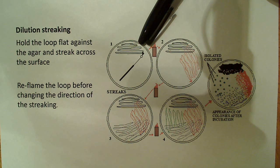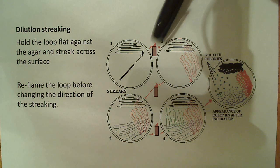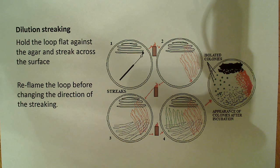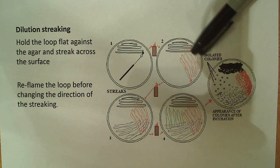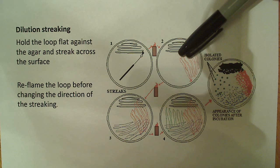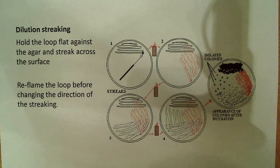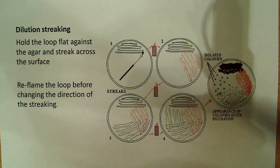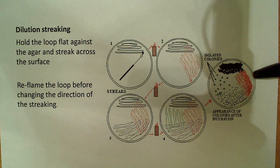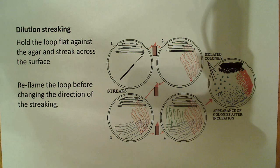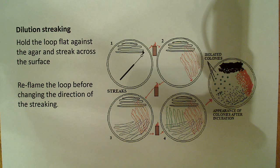You do your first set of streaks — say five swipes across with the loop. Then you flame the loop again to sterilize it, choose another spot, and run the loop back through a few times through the original streak. Each time you're diluting it more and more — getting fewer and fewer bacteria on the loop. You continue doing this a third time, and possibly a fourth, though I'd usually recommend stopping at three. What you end up with is a large number of colonies in the first section, but the goal is those single isolated colonies at the end, because those likely developed from a single cell. That can then be transferred to another medium, and you wind up with a pure culture.